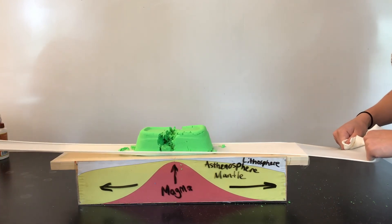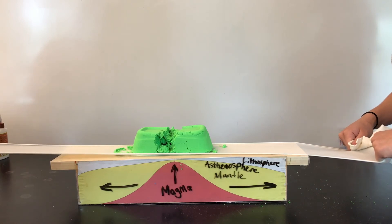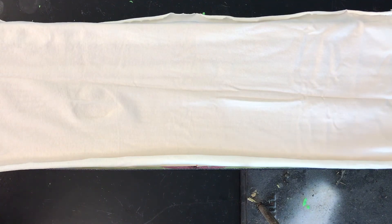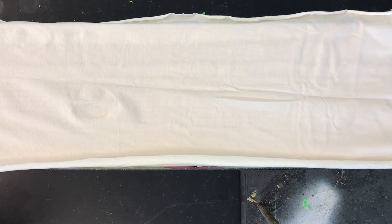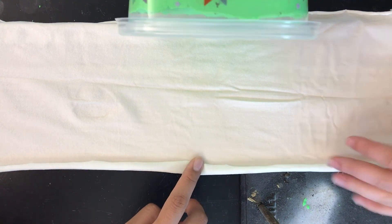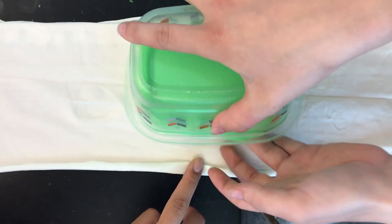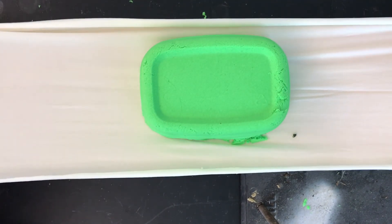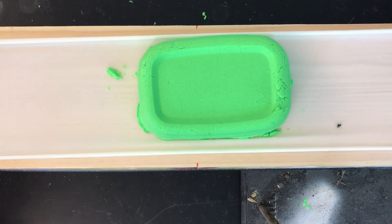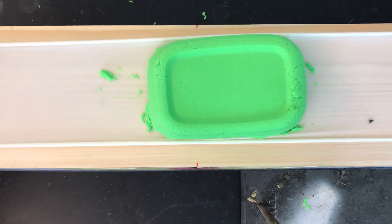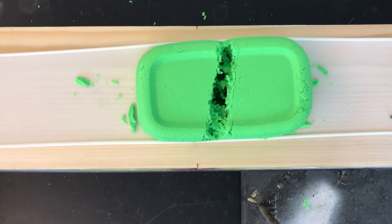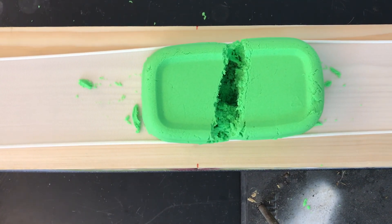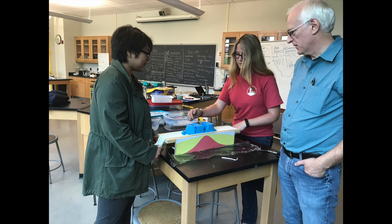This model also addresses the misconception that the crust and the lithosphere are the same thing. Although our model demonstrates what we were trying to convey, there are limitations to its setup. To show the stretching of the sand, we placed it on top of the stocking which represents the oceanic crust. Continental crust simply does not rest on oceanic crust, which is an error that should be addressed when presenting the model to students. Another limitation is that the thickness of the layers of the Earth are not to scale. When presenting to students, the thickness of each layer should be addressed so students do not think the crust is thicker than the mantle.